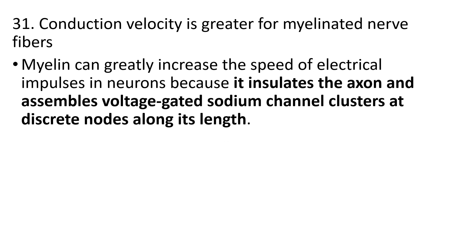Myelinated fibers can greatly increase the speed of electrical impulses in neurons because myelin insulates the axon and assembles voltage, creating sodium channel clusters at discrete nodes along its length. In short, myelin is the substance which insulates the nerve fibers. Insulated nerve fibers are called myelinated, and non-insulated nerve fibers are called non-myelinated nerve fibers.